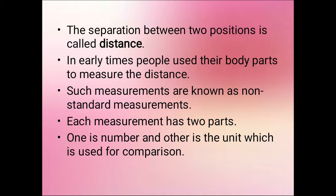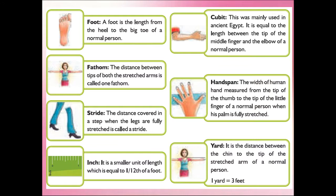Some of the non-standard measurements are: foot, a foot is the length from heel to the big toe of a normal person. Then fathom, it is the distance between the two stretched arms tips. The distance will calculate between the tips of two stretched arms is called one fathom. The stride, it is the distance covered in a step.